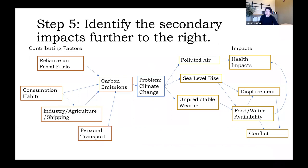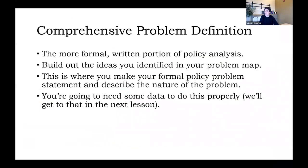At this point, your paper should look like a web with contributing factors on the left side, impacts on the right side, and arrows indicating all sorts of relationships between these things. Now we're going to move into comprehensive problem definition — the more formal written portion of policy analysis. We did the brainstorming, and now we're going to build on this and really elaborate.